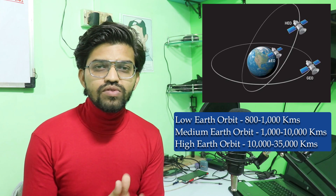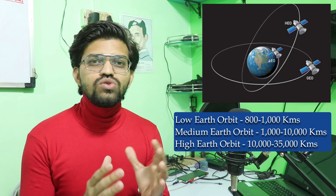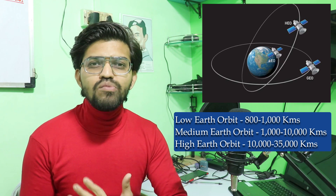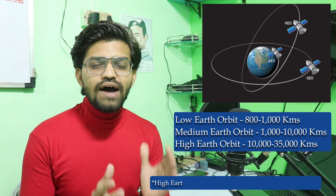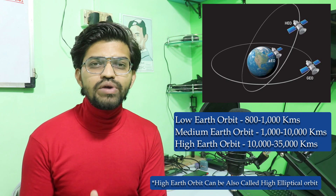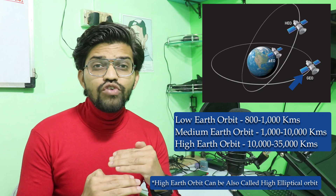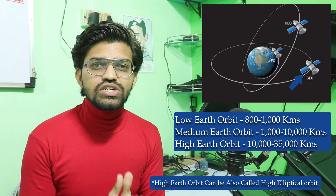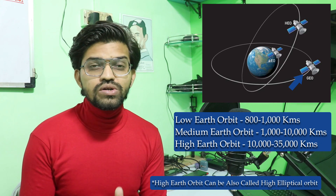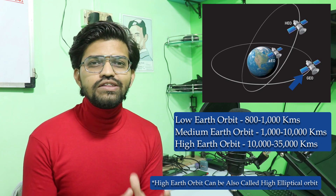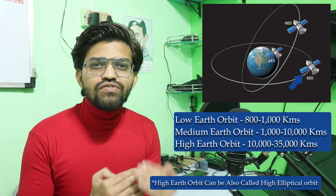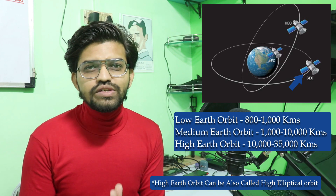The medium earth orbit mostly hosts communication satellites. The last category is the high earth orbit — this is the geosynchronous orbit where the altitude ranges from 10,000 kilometers to 35,000 kilometers. The geostationary orbit comes under this high earth orbit type. So these are the different types of orbits around the earth.